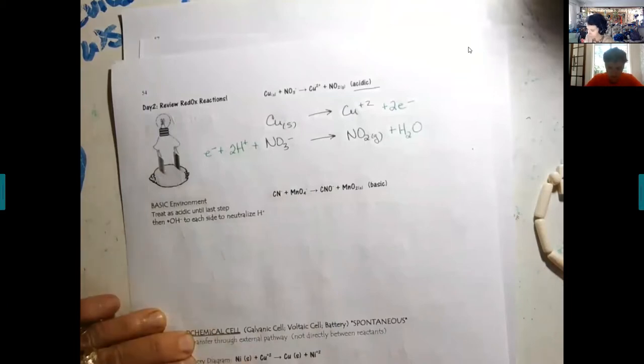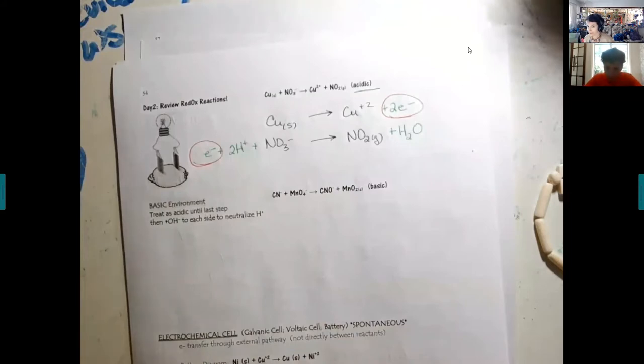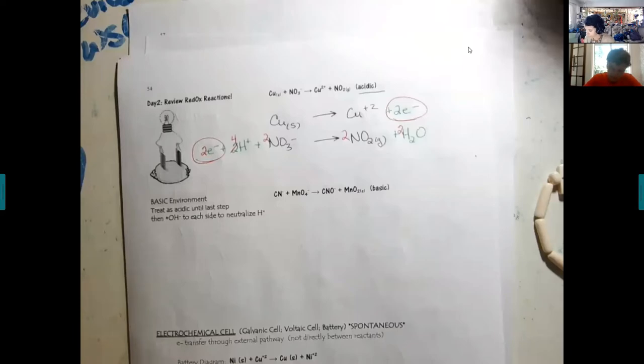Before we go on, before we add them together, the key to adding them together is your electrons have to cancel. The electrons will always be on opposite sides in your two half reactions because one reaction is losing and one is gaining. We need two electrons in both equations. I recommend actually going through and multiplying that second equation by two. Write in all your numbers. Using different colors can be really helpful.